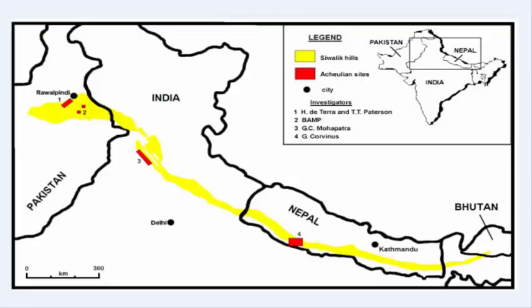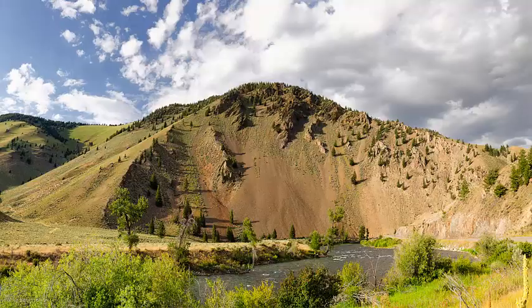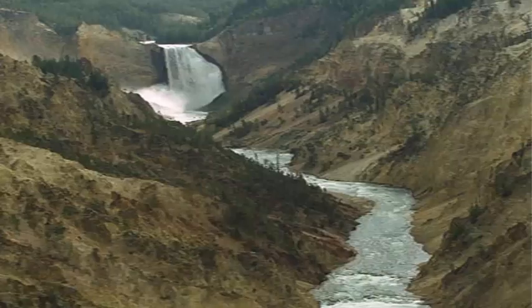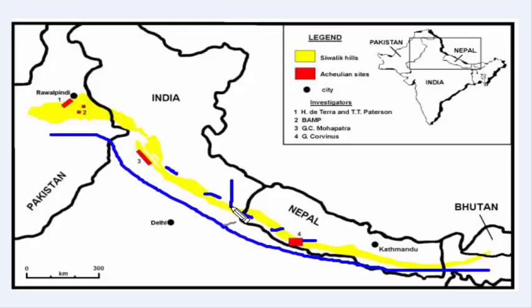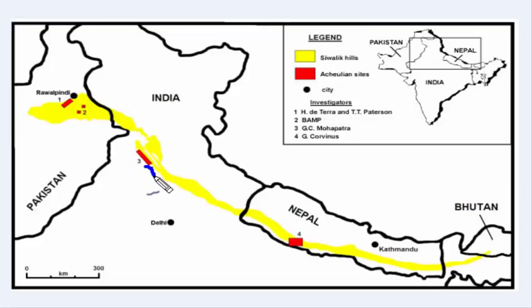Now let's understand the Bhabar zone. Looking at the map, this is the Shivalik hill. When there are hills, there are slopes, and between the hills there are deep V-shaped cuts. These cuts are generally made by the rivers that come from the Himalayas. With the speed at which they flow, they bring along heavy rocks. So the Bhabar is just a narrow belt of 8 to 10 km.